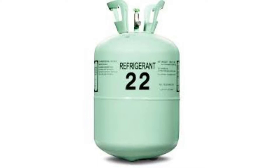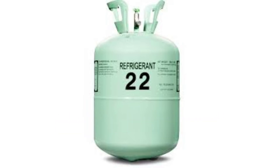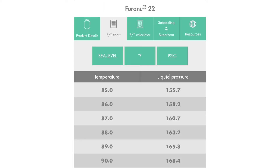To understand fractionation, let's first consider R22. R22 was a single compound refrigerant, which means that it was not a blend. So you could add it in vapor or liquid form — it didn't matter, because you were adding the same compound into the system. If you look at the pressure-temperature chart, you'll see that there is only one saturation temperature for any given pressure. There isn't a bubble point or a dew point. That is indicative of a single compound refrigerant, so fractionation does not occur in a single compound refrigerant.